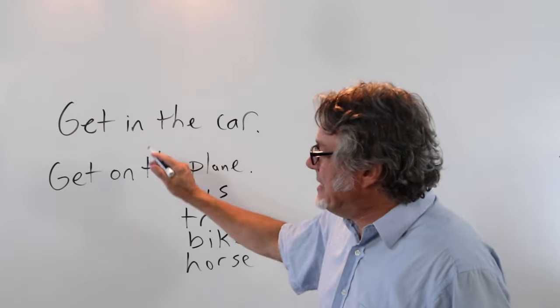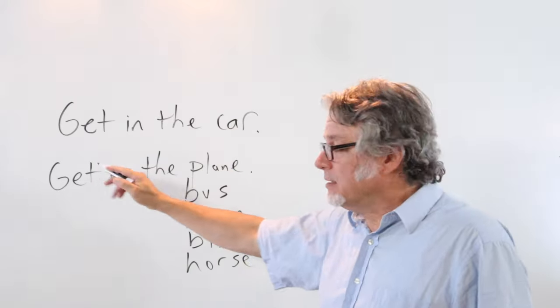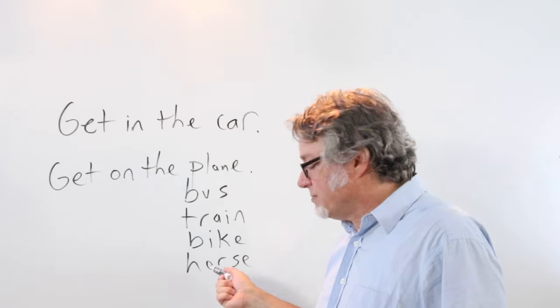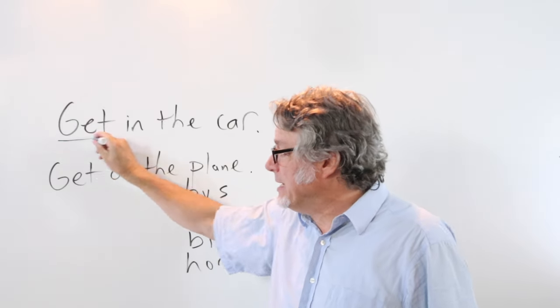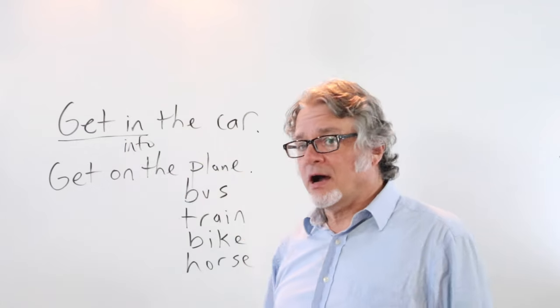Use get in for cars. Get on is used for planes, buses, trains, bikes, and horses, but for a car you get in. Here you could also say get into the car.